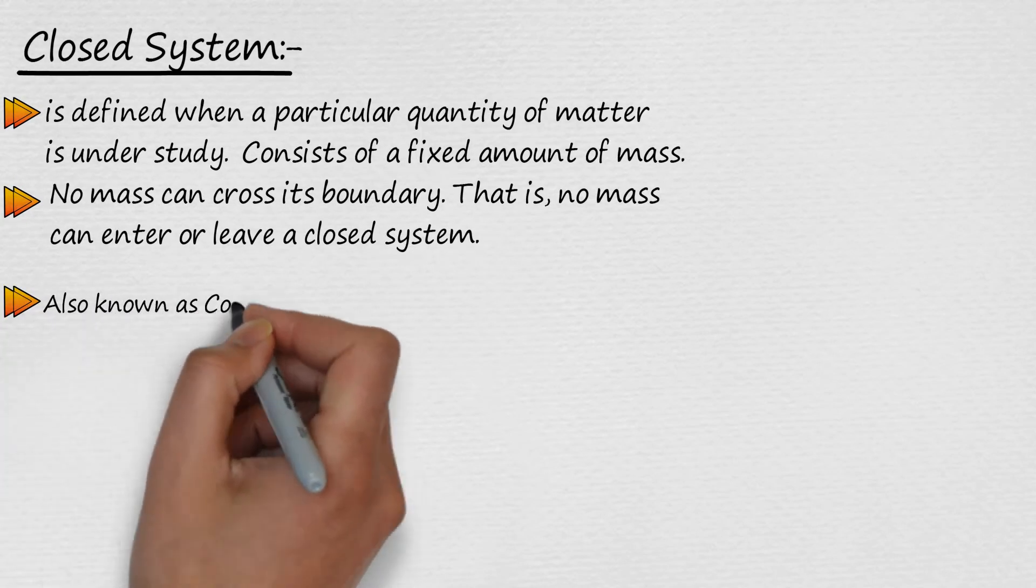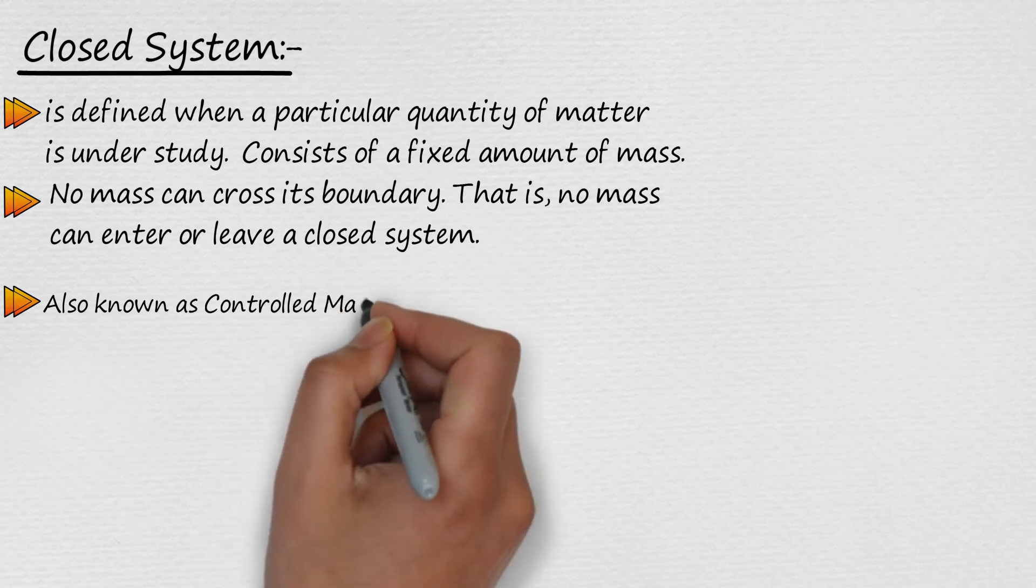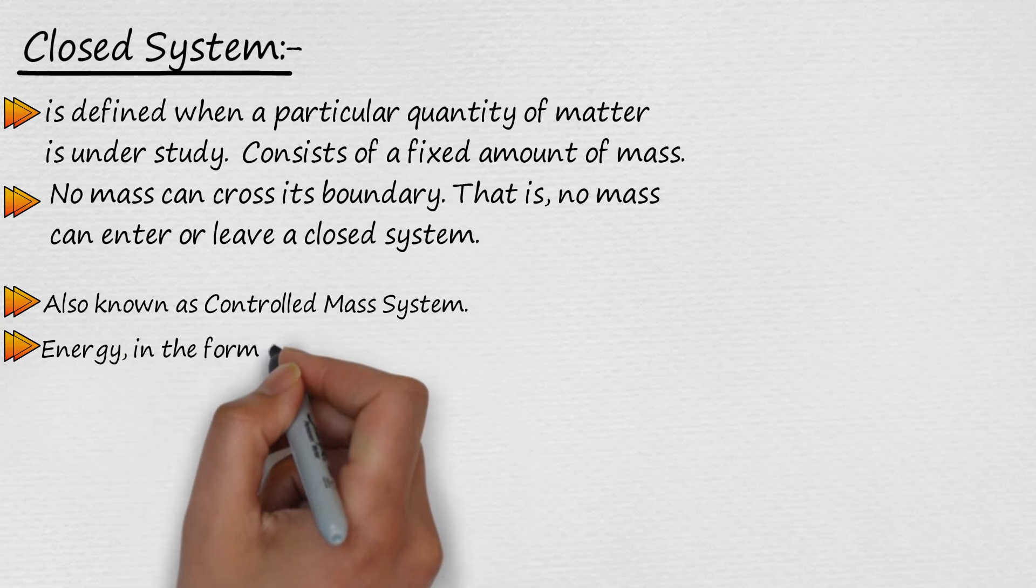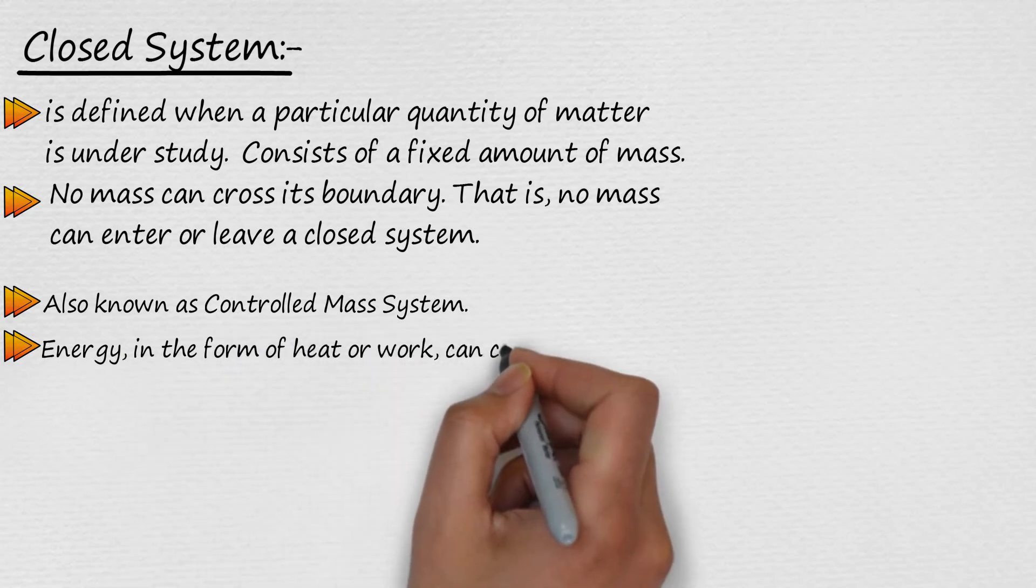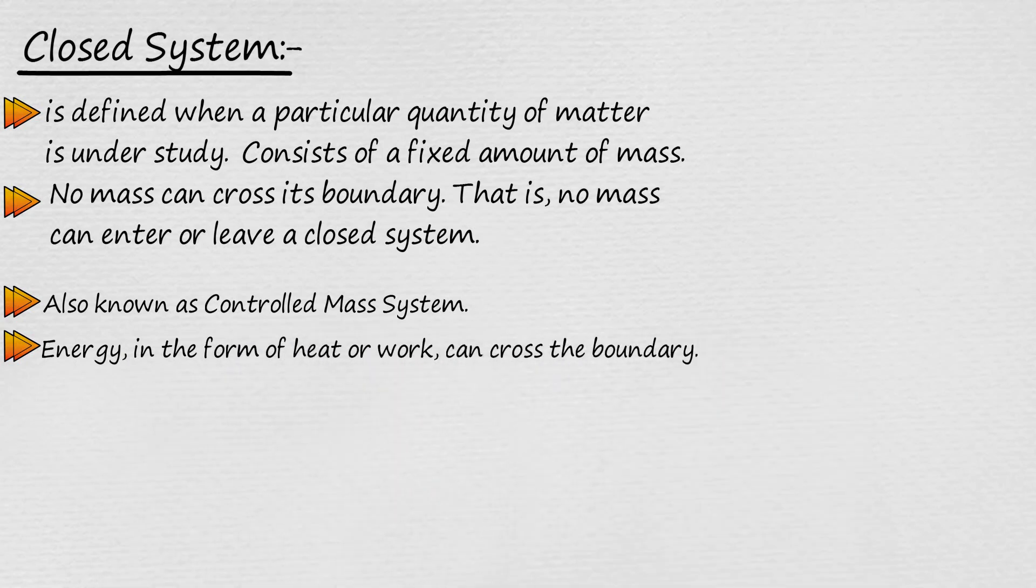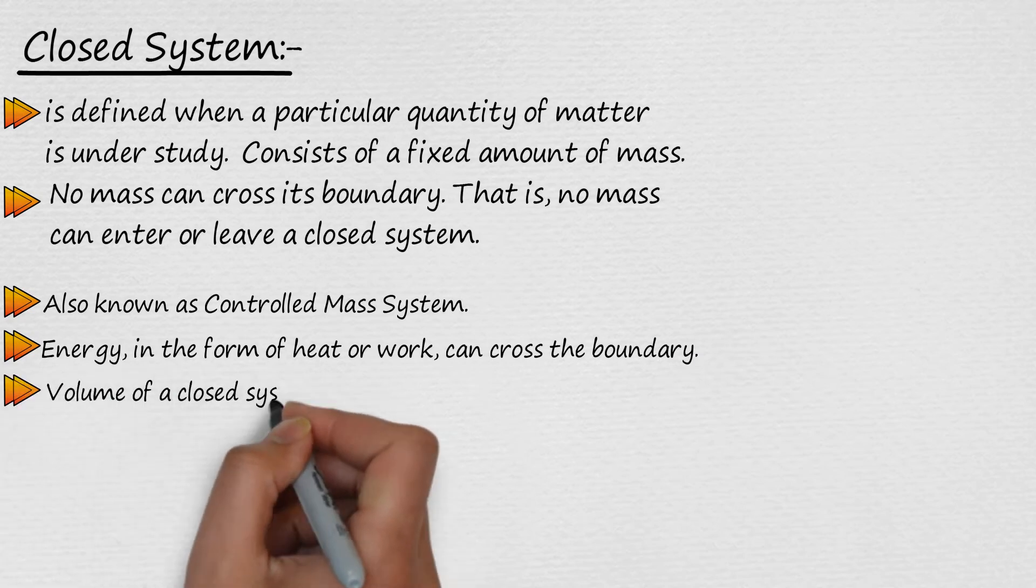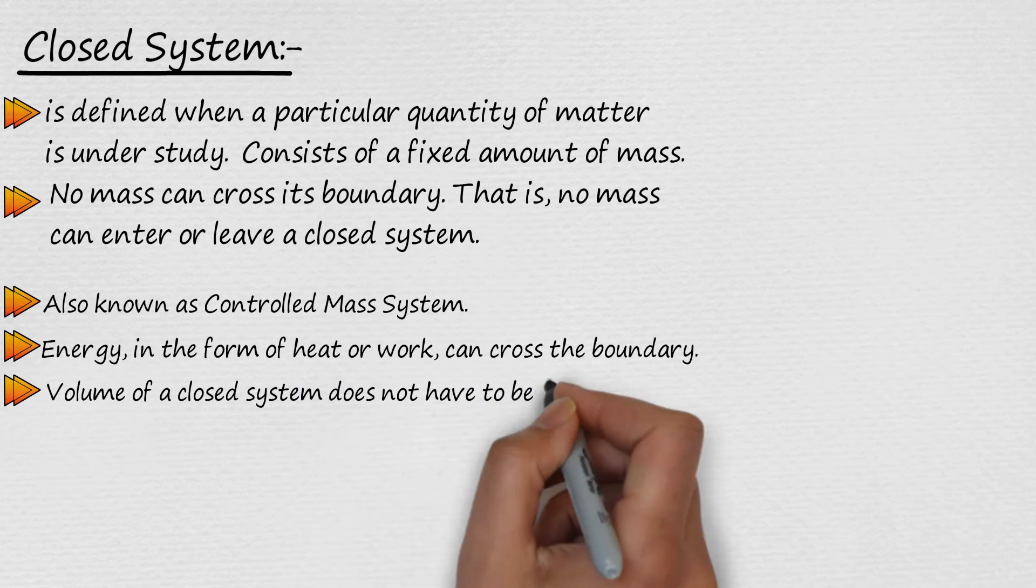This system is also known as controlled mass system. Energy, in the form of heat or work, can cross the boundary. The volume of a closed system does not have to be fixed.